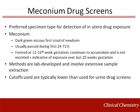Meconium is the preferred sample type for detection of in utero drug exposure. It is the dark green, viscous first stool of newborns that is typically passed in the first 24 to 72 hours of life. Meconium is formed at 12 to 16 weeks gestation, accumulates throughout the pregnancy, and is not excreted until after birth. Therefore, it is indicative of in utero drug exposure during the last 20 weeks of gestation. Methods to detect drugs in meconium are lab-developed and involve extensive sample extraction.